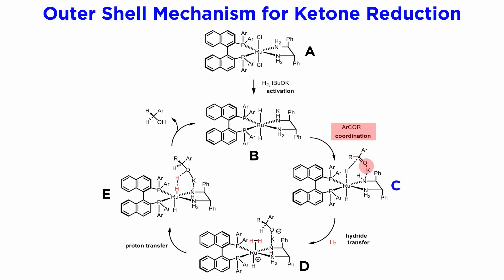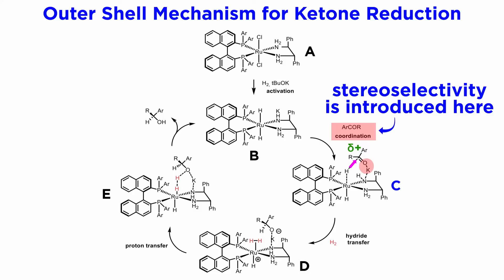Coordination of the oxygen from the carbonyl that is to be reduced with the potassium salt of the amide makes the carbonyl more electrophilic, and able to accept a hydride moiety from the ruthenium complex. It is likely that in this substrate-catalyst complex there is an incipient bond of the hydride with the carbonyl carbon. One of the two diastereomeric transition states, corresponding to two different orientations of the ketone, is highly favored over the other on steric grounds — so this is the step where stereoselectivity is introduced.